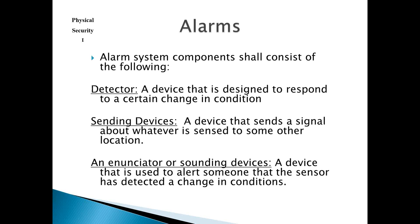All alarm systems have a detector — a device designed to respond to a certain change in condition. It can be anything from infrared to motion detection to high frequency. We'll talk about the detectors in just a minute. It also needs a sending device that sends a signal to some other location, and an enunciator — something to warn whoever is manning the alarm console that something is amiss.